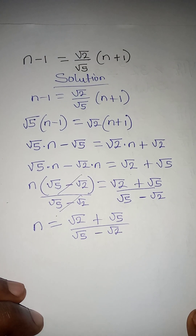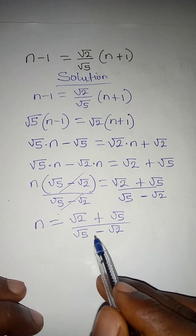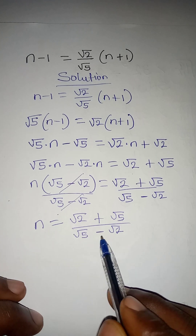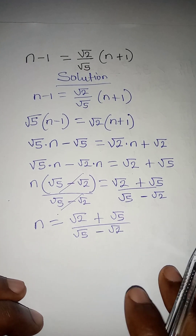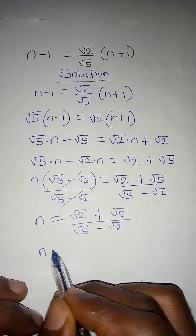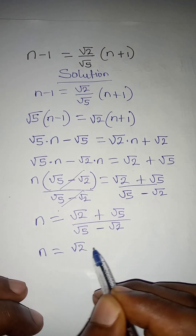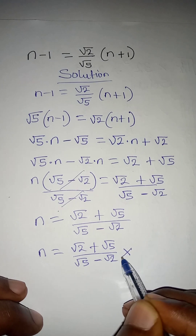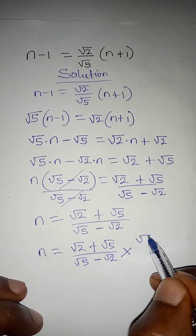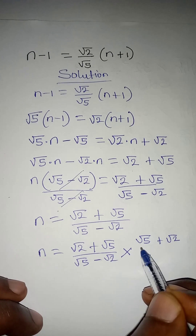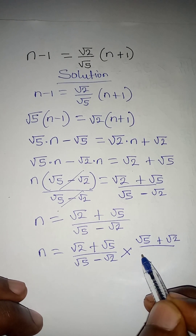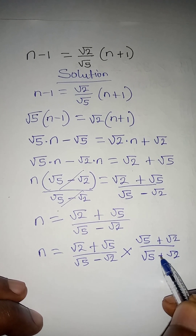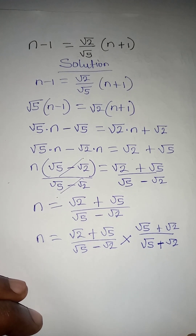Now remember that we can find the conjugate of the denominator and rationalize. The conjugate of root 5 minus root 2 is root 5 plus root 2. So we multiply everything by root 5 plus root 2 over root 5 plus root 2.